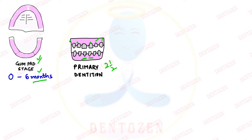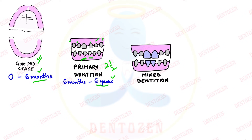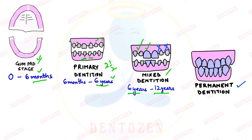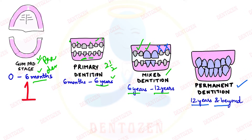By the age of two and a half years, all the primary teeth are present in the mouth. They remain until six years of age, when larger permanent teeth start to replace them. From six to twelve years is called the mixed dentition period, as both primary and permanent teeth are present. By twelve years, all primary teeth are replaced — this is the permanent dentition period. So our journey has four stages: gum pad stage (also called pre-dentate period), primary dentition, mixed dentition, and permanent dentition.